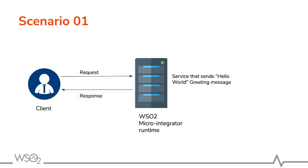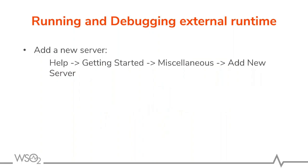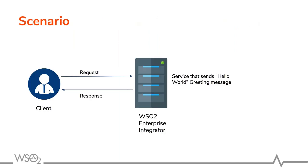That's how to use the internal server for debugging with the micro integrator. Now with the same scenario, let's see how to deploy and debug with the external runtime. For the external server, go to Help in the getting started page, go to Miscellaneous, and add a new server. The scenario is the same — a client sends a request to WSO2 integrator, and the integrator sends a hello world message back.